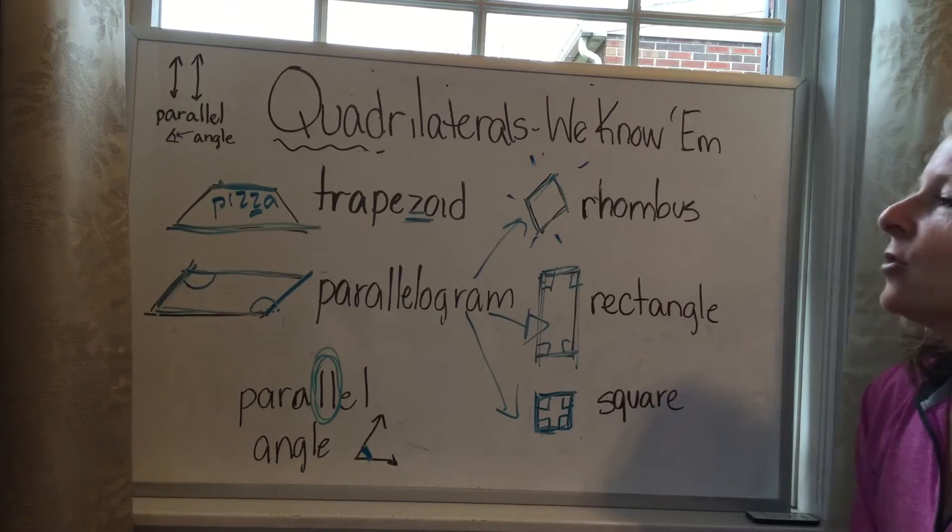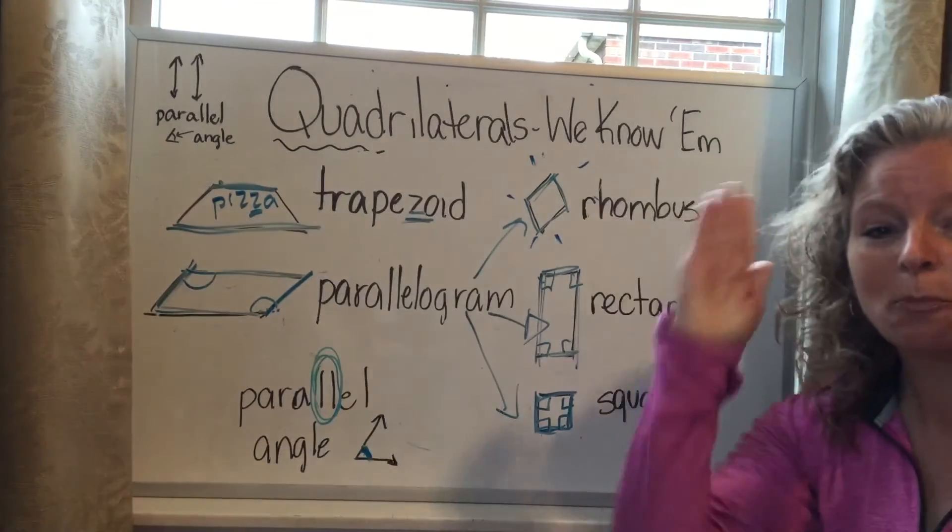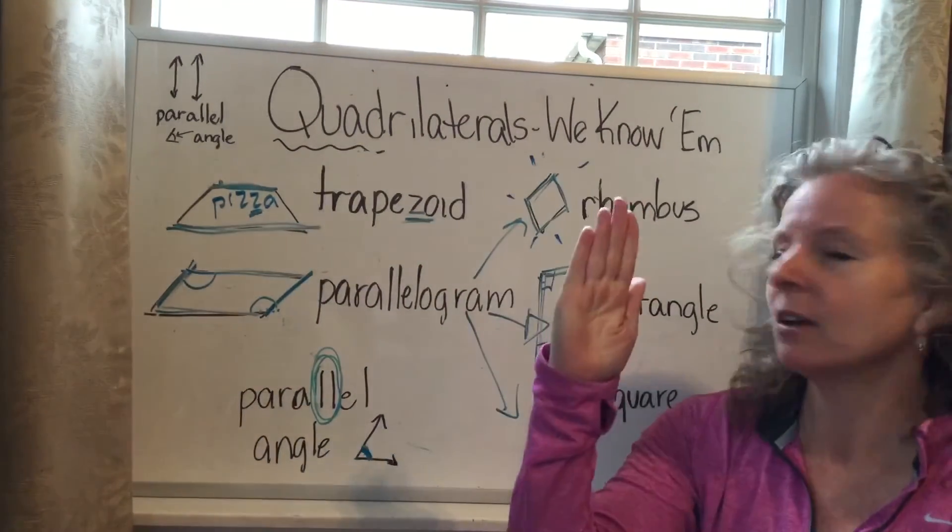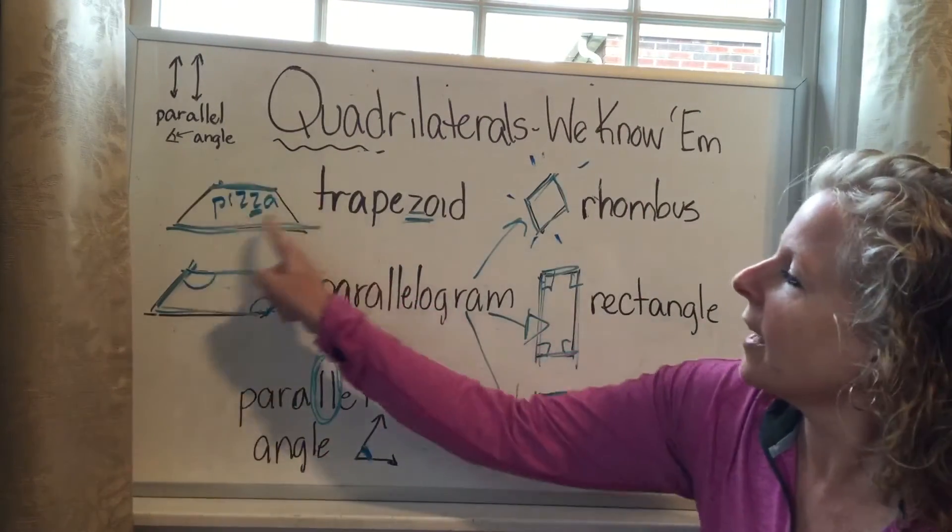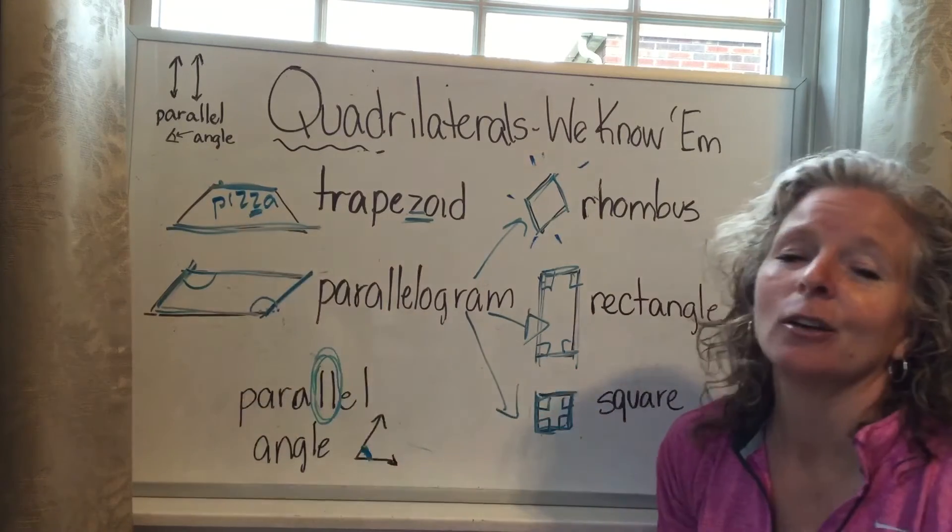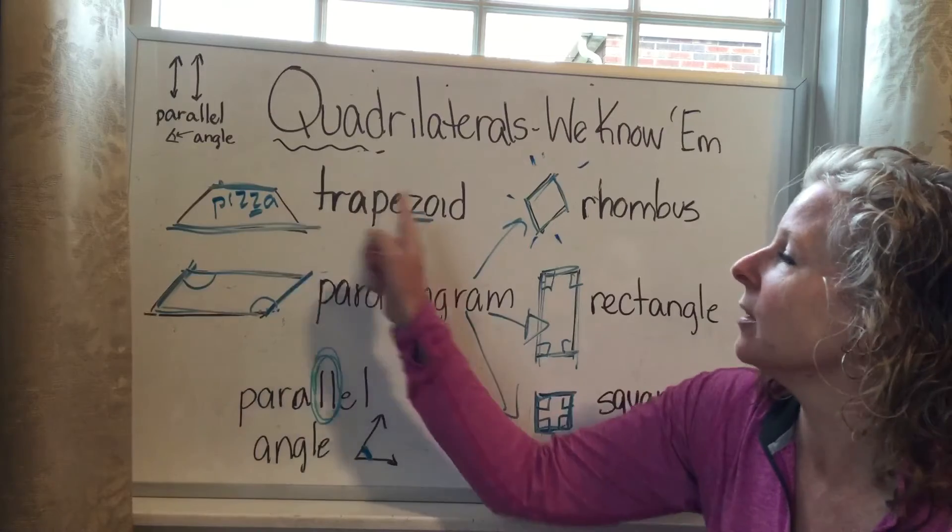Trapezoids have just one set of parallel sides. Trapezoids have just one set of parallel sides. One set of parallel sides looks like the roof of Pizza Hut. Remember, because they both have the letter Z.